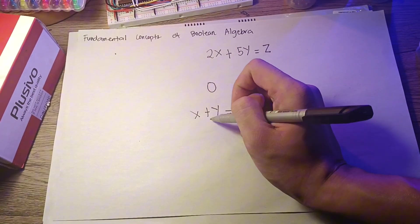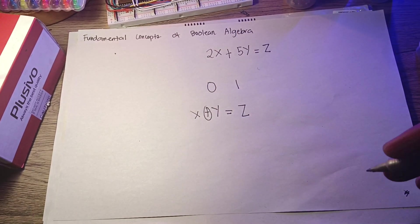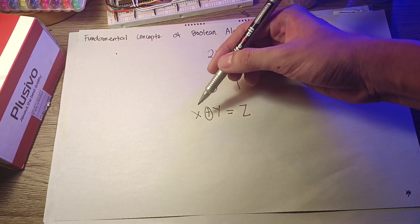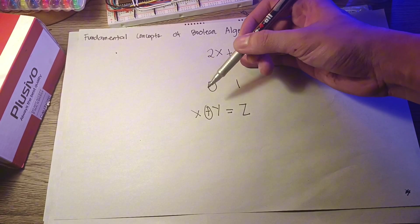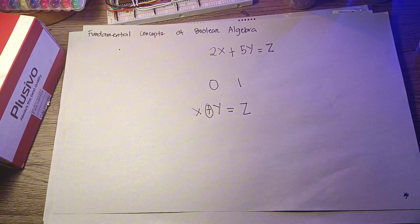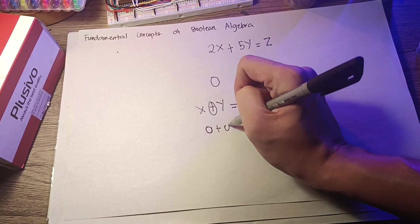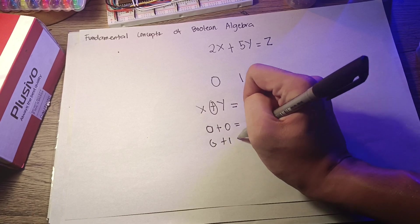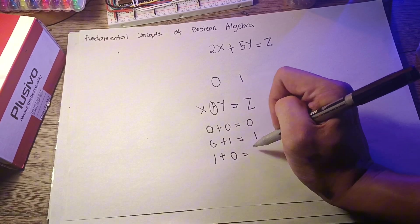This concept will become clearer if another symbol is defined, which is the plus, or the logical addition symbol. When the plus symbol is placed between two variables, say x and y, since both x and y can take only the value of 0 and 1, we can define the plus symbol by listing all the possible combinations: 0 plus 0 equals 0, 0 plus 1 equals 1, 1 plus 0 equals 1, and 1 plus 1 equals 1.